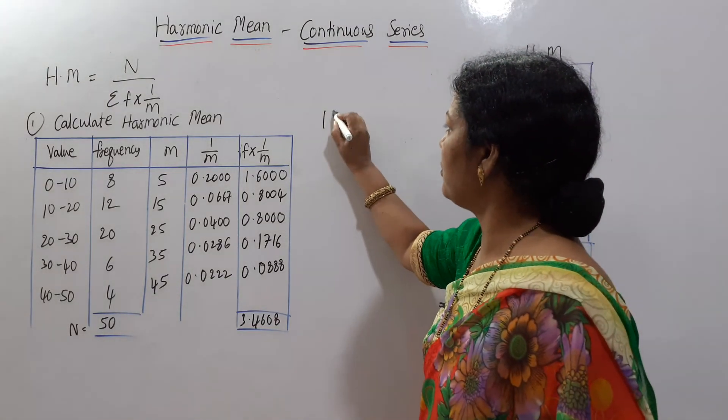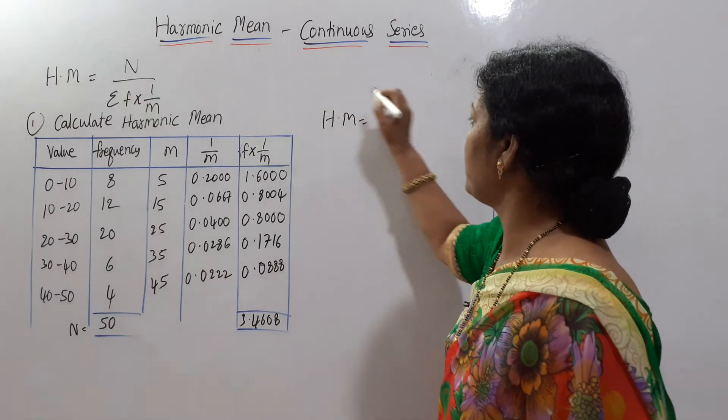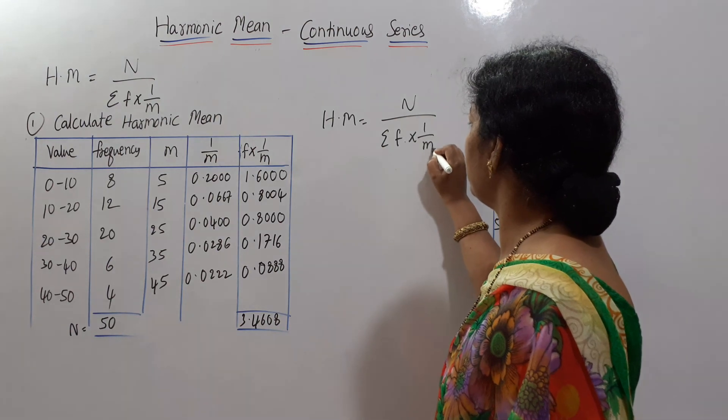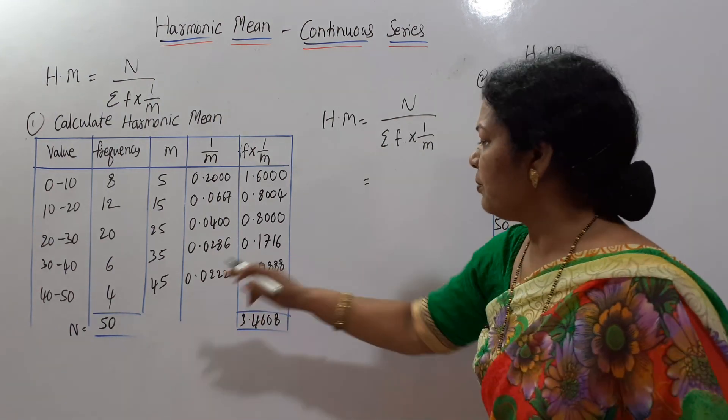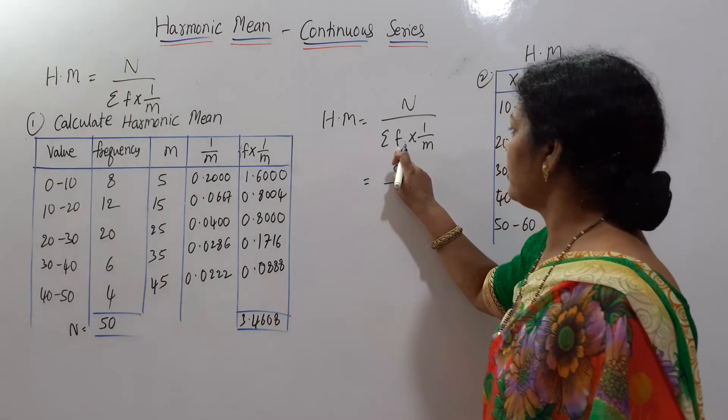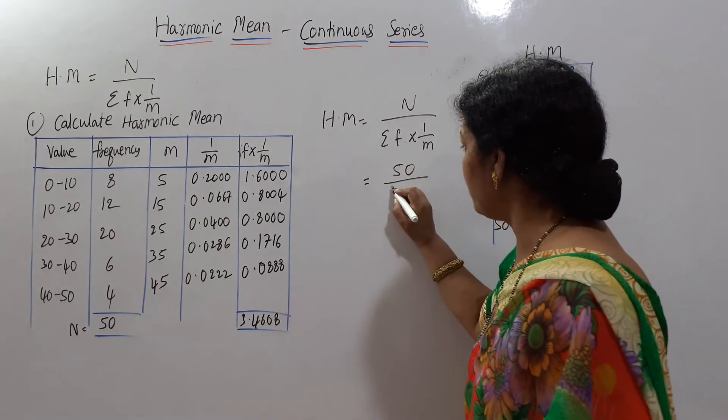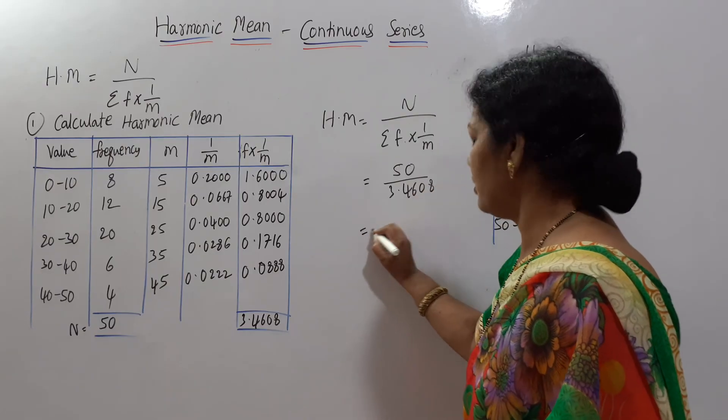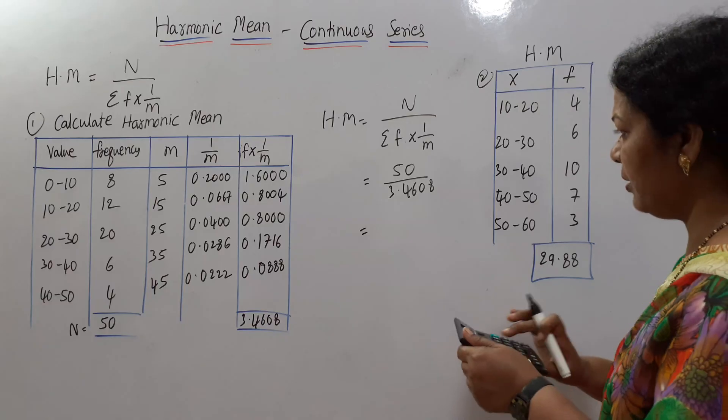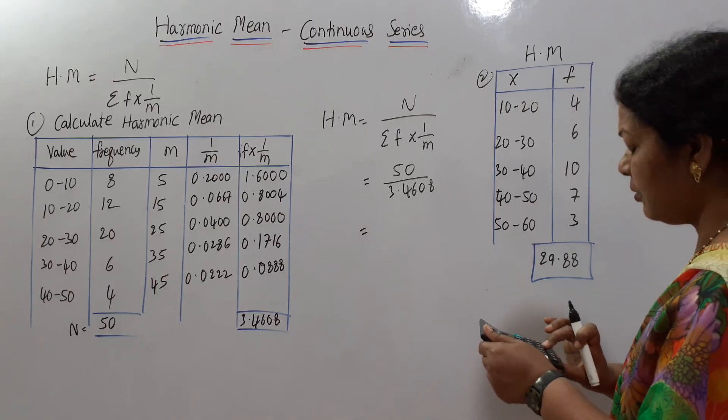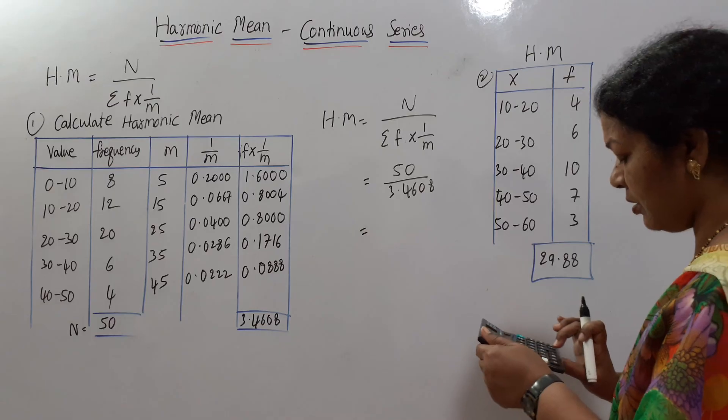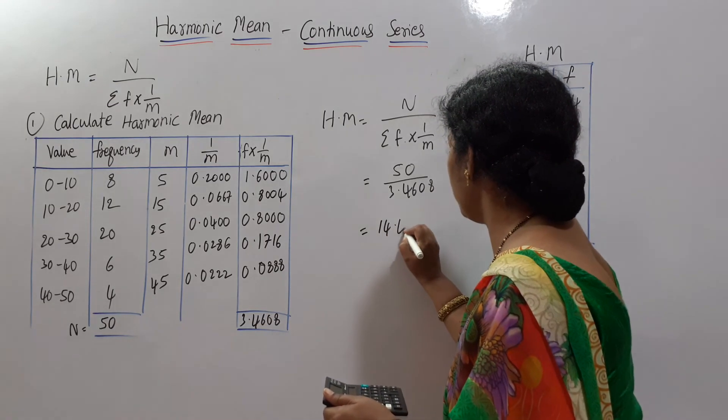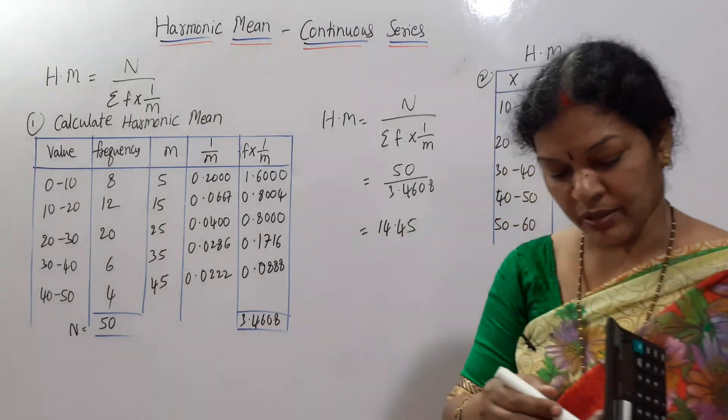Now we will do the calculations. Harmonic mean is equal to, what is the formula? Same formula: N by sigma F into 1 by M. N is here 50. Sigma F into 1 by M is 3.4608. Let us do the multiplication. 50 divided by 3.4608 comes to 14.45.